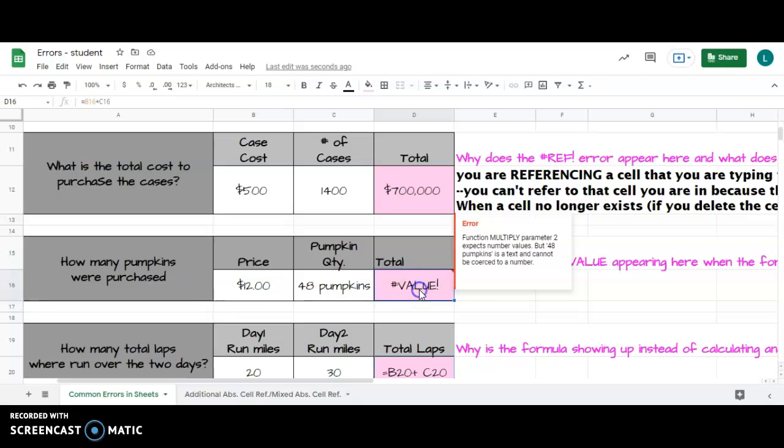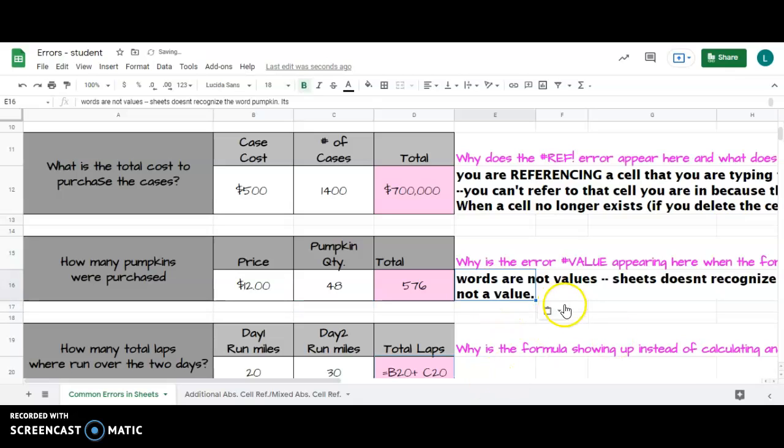Well, pumpkins is not a value—it's text. So if I delete the word pumpkins and hit enter, I get my result, I get my answer.